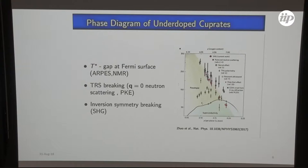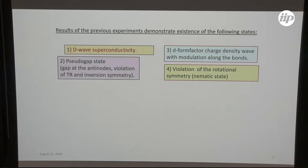There is a charge density wave with modulation along the bonds and d-form factor. There is superconductivity. One can see some time reversal breaking. One has also polarized Kerr effect and even inversion symmetry breaking. So a lot of things happen here. All these experiments show D-wave superconductivity, pseudogap states with gap at the anti-nodes, violation of time reversal and inversion symmetry, D-form factor charge density wave with modulation along bonds.